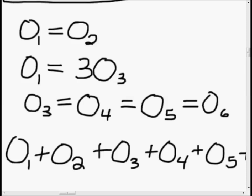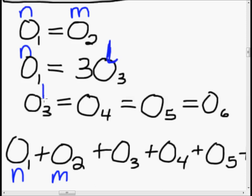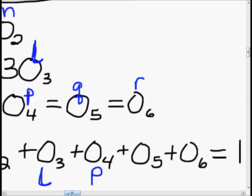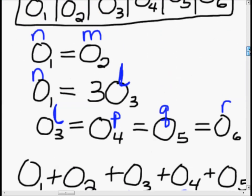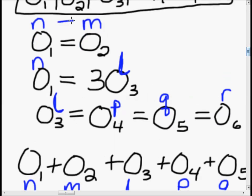I'm going to use different variable names with colors to avoid getting confused with all these O's. I'll call O1 as N, O2 as M, O3 as L, O4 as P, O5 as Q, and O6 as R. This way, if you mess up one of the subscripts, you'll end up in trouble. So this means N equals M — outcomes 1 and 2 are equal.